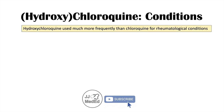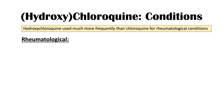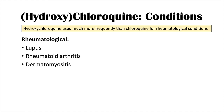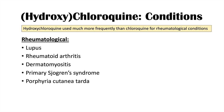Besides protozoal infections, we can use these medications to treat rheumatological conditions as well. Out of the two, hydroxychloroquine is used much more frequently than chloroquine for rheumatological conditions. The conditions we can treat include lupus, rheumatoid arthritis, dermatomyositis, primary Sjögren's syndrome, and porphyria cutanea tarda.